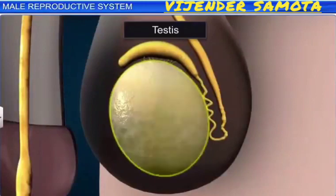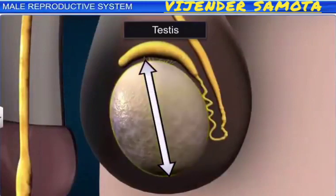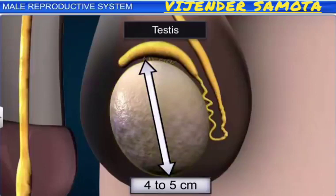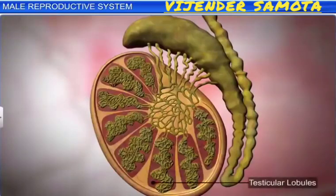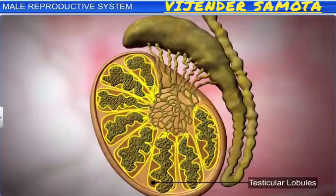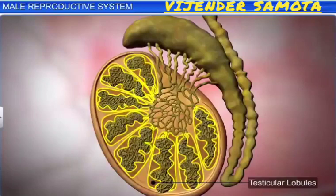The testes are oval in shape, with a length of about 4 to 5 centimeters and a width of about 2 to 3 centimeters. The testes are surrounded by a tough connective tissue capsule called the tunica albuginea. Each testis has 250 compartments called testicular lobules. Each lobule in turn contains 1 to 3 highly coiled seminiferous tubules.